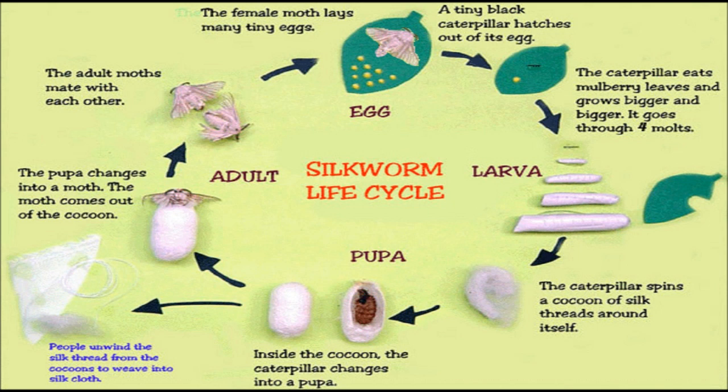Processing of silk: The cocoons are obtained before the larvae mature by dipping the cocoon in hot water. The process of obtaining silk threads by soaking cocoons in hot water is called reeling or filature. From 4 to 8 cocoons are separated and slightly twisted to create a single strand. Many strands together constitute a silk yarn. These strands are then spun into silk cloth by the weavers.